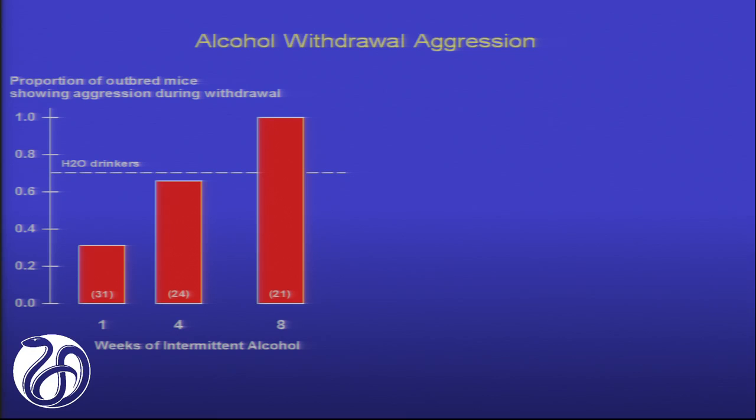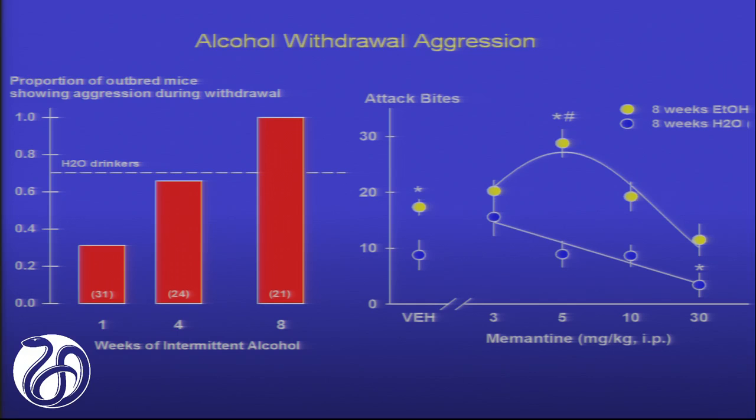The longer an individual is exposed to alcohol, the more intense the withdrawal, and the more intensive the aggressive episodes. Moreover, when challenged with glutamate — an excitatory amino acid — the alcohol-consuming individual in withdrawal can become hyper-excitable in the phase of withdrawal. So the biphasic action and withdrawal periods are the phases where we see very large systematic dose-dependent changes in aggressive behavior.